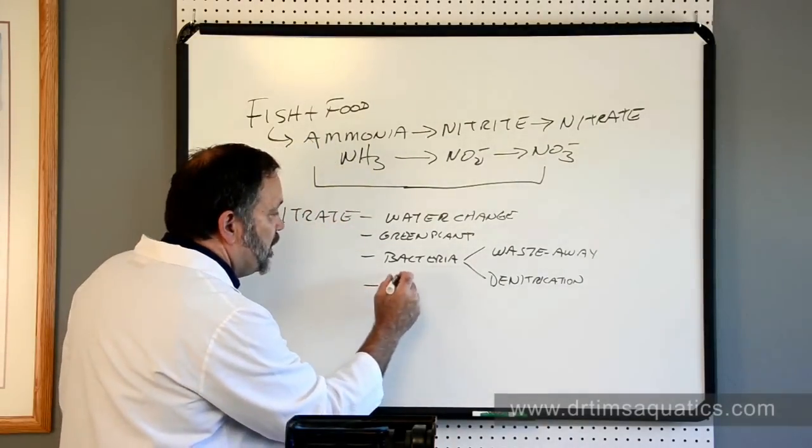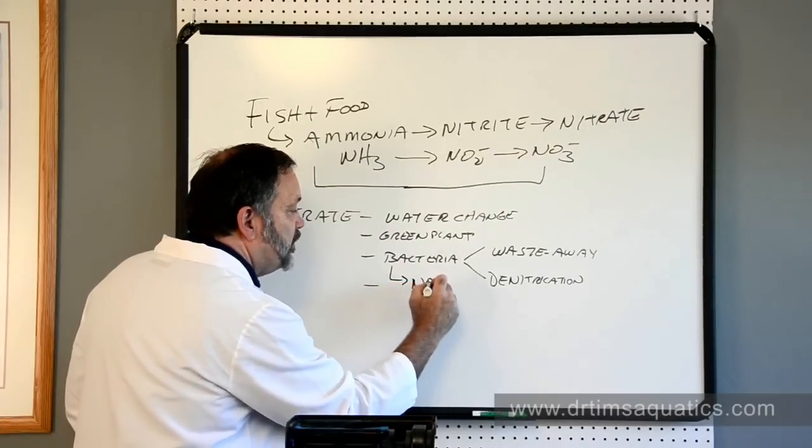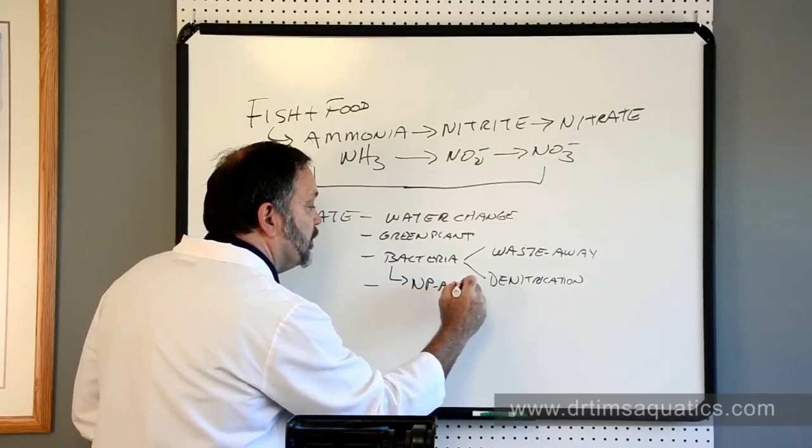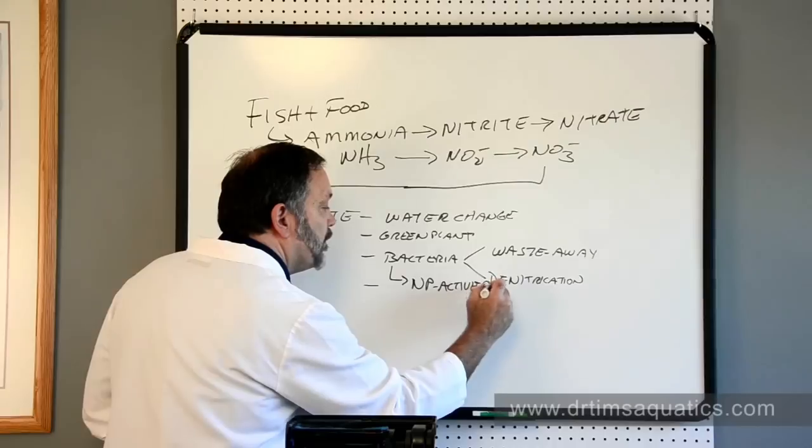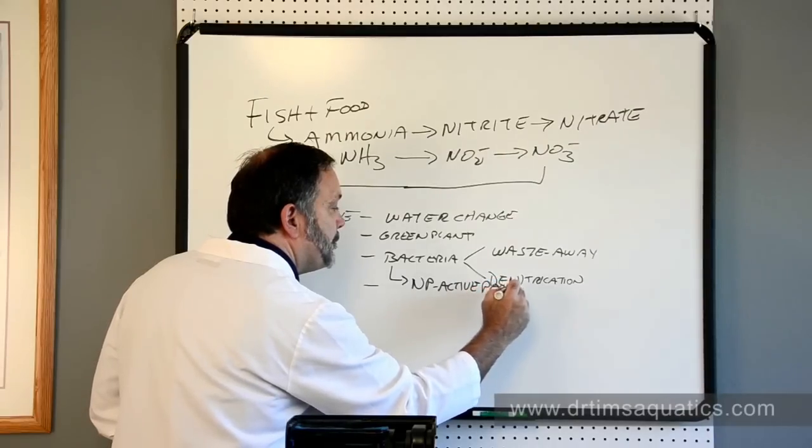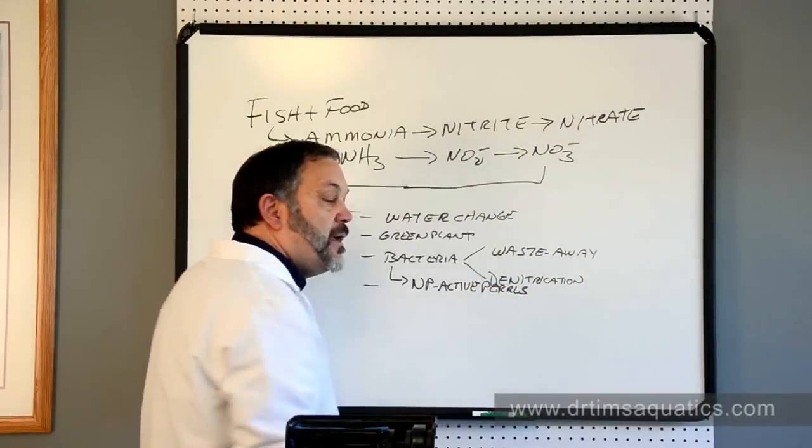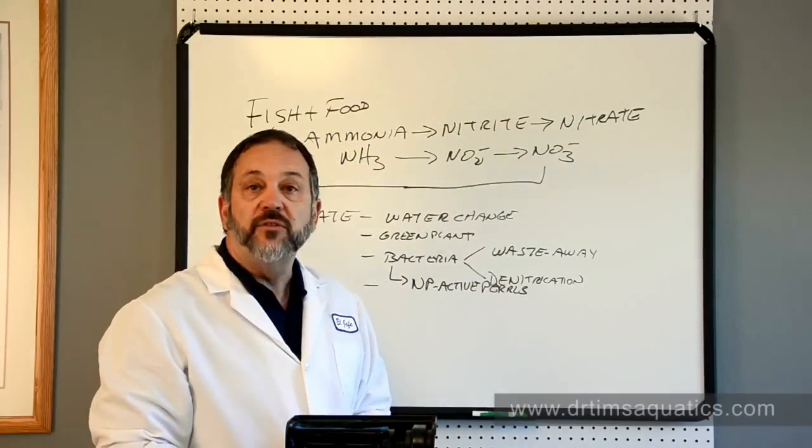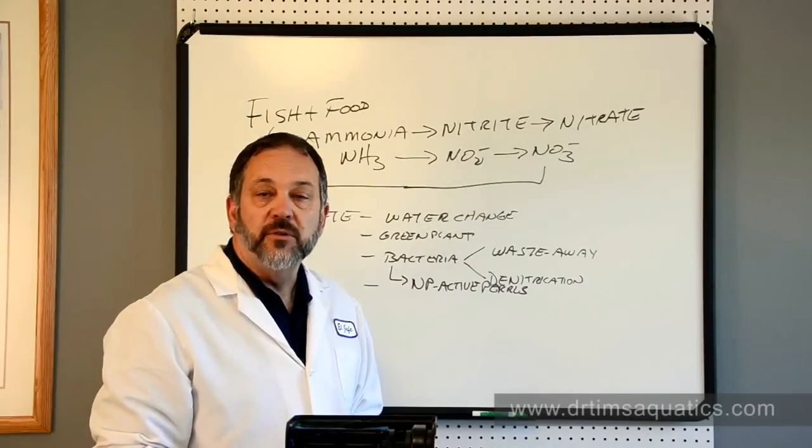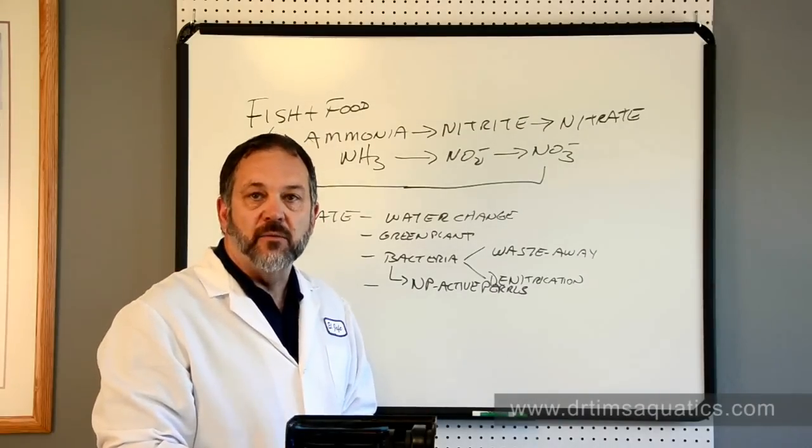The fourth way you can do it, it's maybe a subset of this, is by using our NP-Active pearls. And that is a substrate to grow like the waste-away bacteria on the pearls to assimilate the nitrate out of the water.